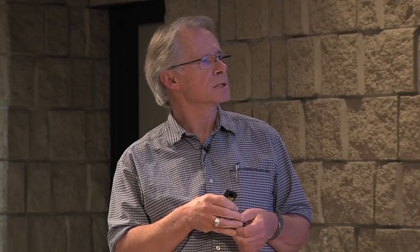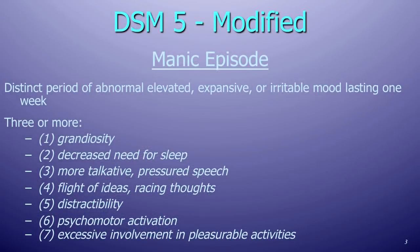We now have our fifth edition of the Diagnostic and Statistical Manual of Disorders used by psychiatrists primarily in North America. The manic episode hasn't changed — this is the severe elevated mood state that Bipolar 1 patients get into. In order to make this diagnosis, we need a distinct period of abnormally elevated, expansive, or irritable mood lasting at least a week. The time element is very important — if you are euphoric for a couple of hours or a day, it doesn't cut it.